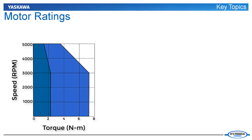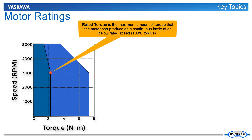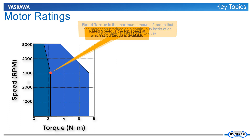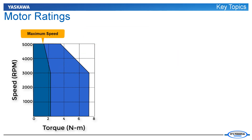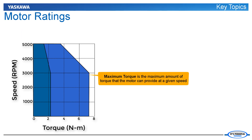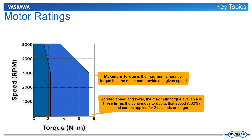The speed-torque curve displays several points of interest. Rated torque is the maximum torque the motor can produce continuously at rated speed and lower, and is limited by motor heating. This rated torque is given the value of 100% torque. Likewise, rated speed is the highest speed at which rated torque is available. The motor can continuously run faster than rated speed, but the torque available drops significantly the faster the motor runs. The motor's maximum attainable speed is listed at the top of the speed-torque curve, and the maximum torque — generally three times the continuous torque — can be applied for three seconds or longer.